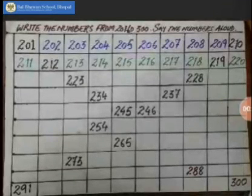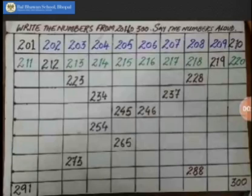Welcome children, today we are going to do the grid. Can you see the grid? There are numbers from 201 to 300. So let's start — it is given in your book, you have to complete this grid on your own. Now what are the numbers? Count with me.